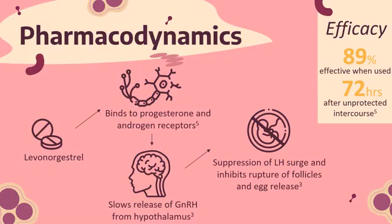Moving on to the drug's pharmacodynamics, oral contraceptives containing levonorgestrel suppress gonadotropins, thereby inhibiting ovulation. Specifically, levonorgestrel binds to progesterone and androgen receptors and slows down the release of gonadotropin-releasing hormone from the hypothalamus. This results in the suppression of the normal physiological luteinizing hormone surge that precedes ovulation, thereby inhibiting the rupture of follicles and viable egg release from the ovaries.